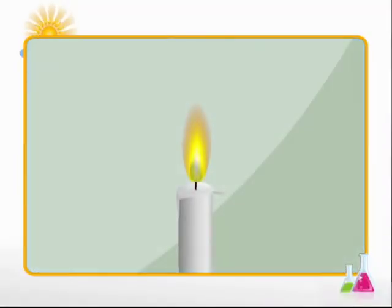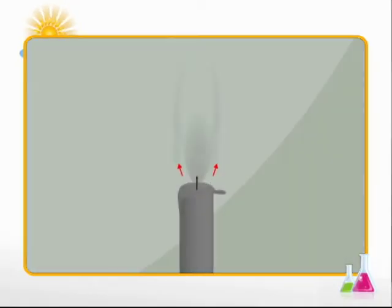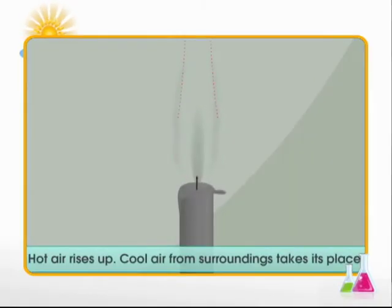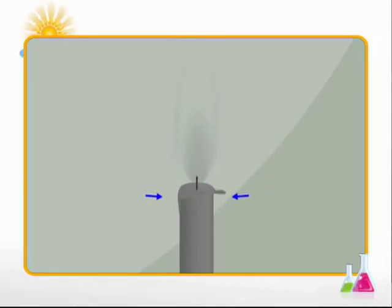A burning candle can help us understand the basic principle involved in wind current formation. When a candle burns, the air near the flame becomes hot and rises up. The cool air from the surroundings takes its place. This causes the movement of air above the candle flame.